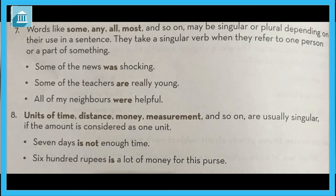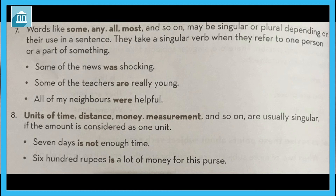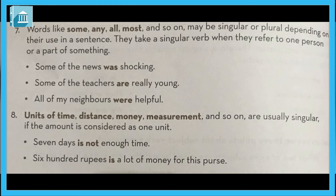Eighth rule: units of time, distance, money, and measurement are usually singular if the amount is considered as one unit. For example, 'Seven days is not enough time.' '600 rupees is a lot of money for this purse.' These are all the eight rules of subject-verb agreement.